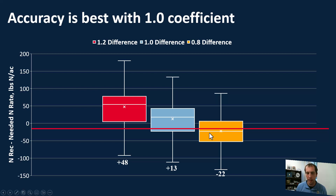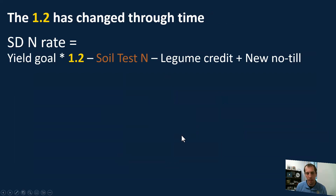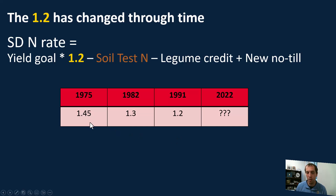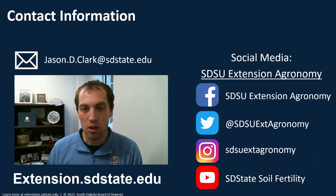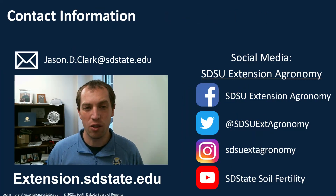This shows us that 1.0 is likely the most accurate multiplier in our current recommendation system — better than 1.2. And this isn't a sudden change; looking back, the coefficient started at 1.45 in 1975 and has decreased over time. Based on our data, in 2022 the 0.9 to 1.0 range is about right. Going forward, the recommendation is that the 1.2 multiplier will become 1.0: take your yield goal, multiply by 1.0, subtract soil test nitrogen, subtract any legume credit, and add any no-till debit. Thank you for your time — feel free to follow us on social media for more updates.